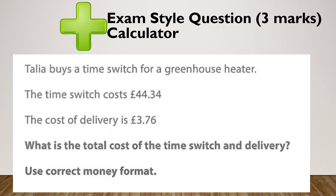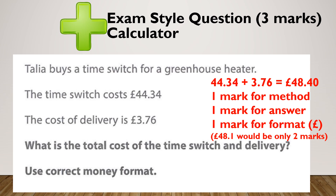Let's try another one. Talia buys a time switch for a greenhouse heater. This is the cost of the switch and the cost of delivery — what is the total cost? Use correct money format. By adding them together, hopefully you got £48.40. Again, one mark for addition, one mark for your answer, and one mark for the format — you would need the pound sign and the 40 pence written correctly.